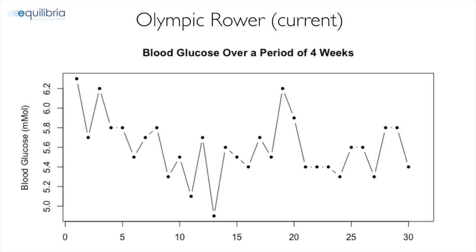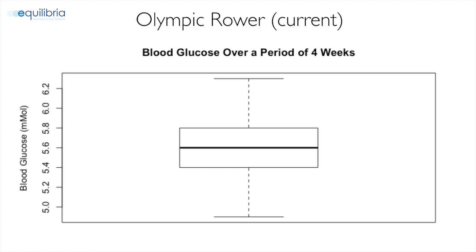One of the things I wanted to show you is data from one of my colleagues: this is the blood glucose over a period of four weeks for a current Olympic medalist. As you can see from this figure, it seems very erratic, and on some days the readings were in the high fives and sixes. That gives a quick idea that despite the person being on a healthy diet, this is not something we want to see in a professional athlete. This box plot of the same athlete illustrates even better that the mean is around 5.6.